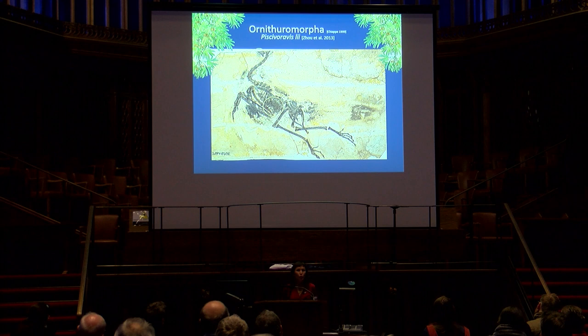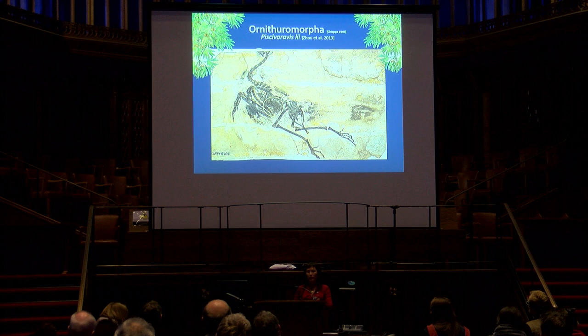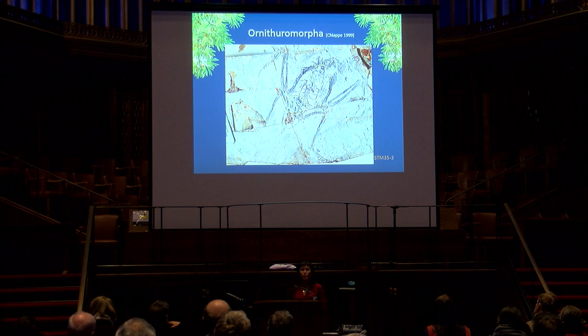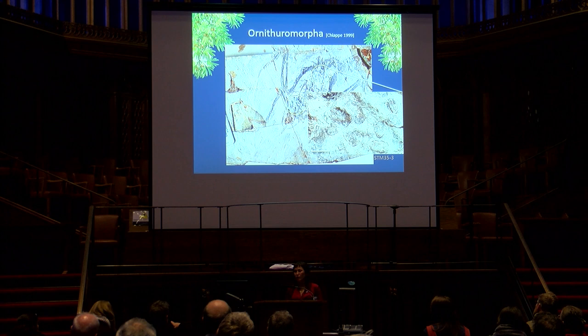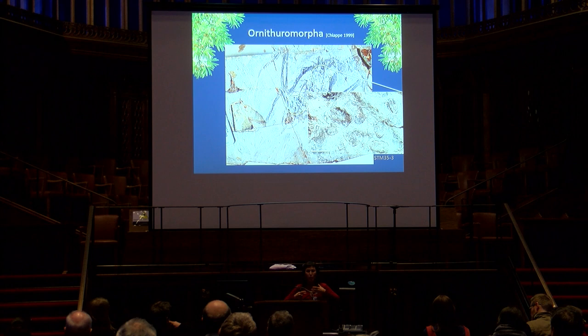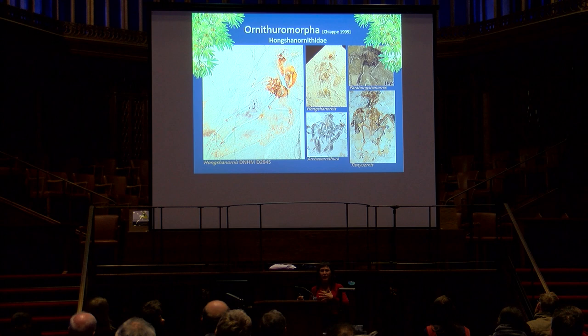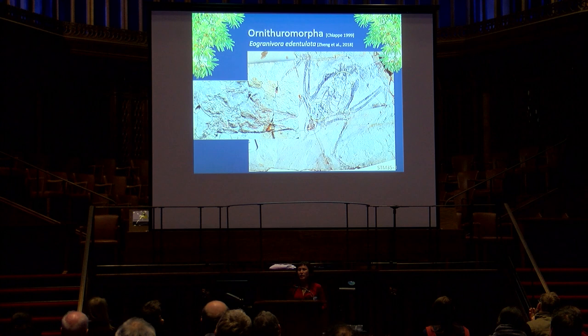There is one other ornithuromorph taxon from the Jehol that preserves direct evidence of piscivory, though unfortunately no cranial material is preserved, so we cannot make inferences about cranial morphology and diet. There is also a specimen originally assigned to Hongshanornis preserving a crop located over the furcula — similar to the granivorous crop in Sapeornis. However, Hongshanornithids are a small group of wading birds, so granivory is inconsistent with the inferred ecology. On closer inspection, it turned out not to be Hongshanornis at all — it is a distinct, larger, edentulous taxon with wings longer than its legs, opposite to Hongshanornithids.